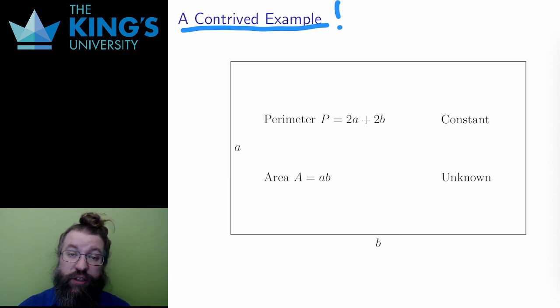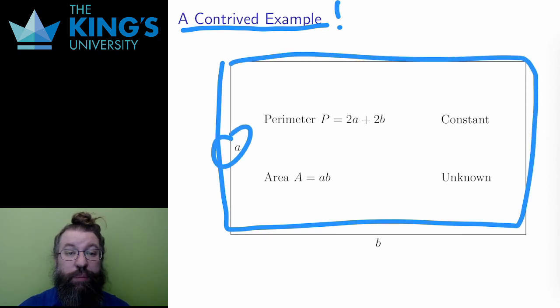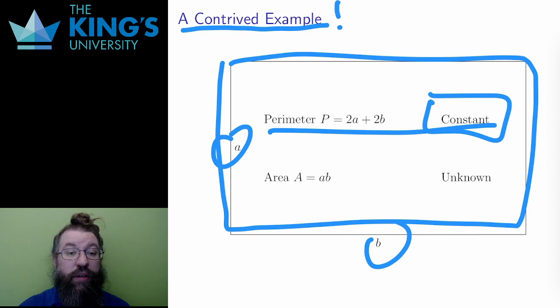The problem is this. There's a rectangle with height a and width b. The perimeter of this is constant. 2a plus 2b is fixed. Can't change. However, the area is unknown. So, what is the largest area you can enclose with a fixed perimeter?